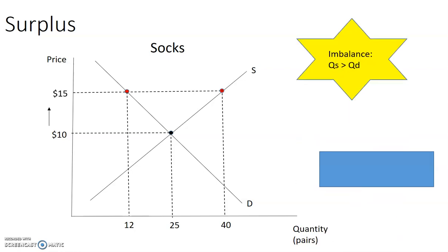There's an imbalance that's created here known as a surplus because the quantity supplied is greater than the quantity demanded. You can calculate the size of the surplus by subtracting the quantity demanded from the quantity supplied at $15. And that's where you have 40 quantity supplied minus 12 of the quantity demanded to give you a surplus of 28 units.